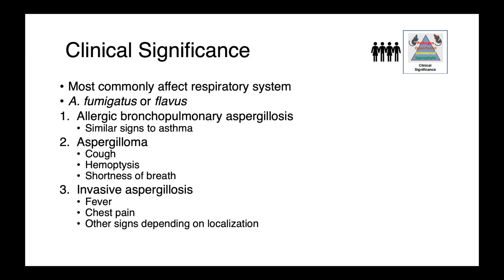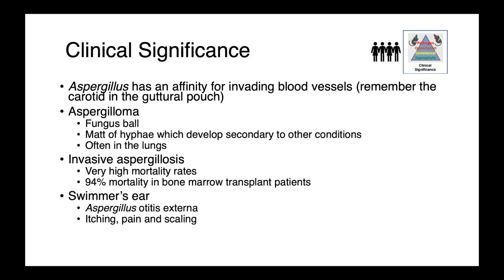We can also have invasive aspergillosis — patients will be febrile, have chest pain, and other signs depending on where the infection has localized. Aspergillus has an affinity for invading blood vessels — remember that carotid artery in the guttural pouch — and the same is certainly true in people as well.